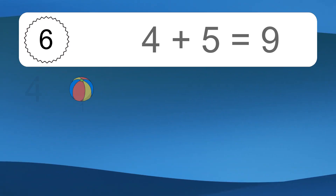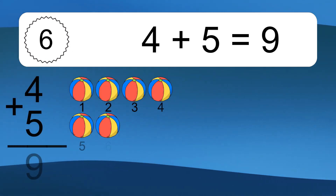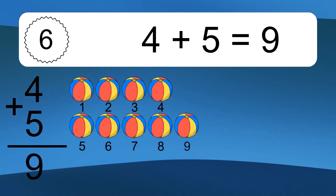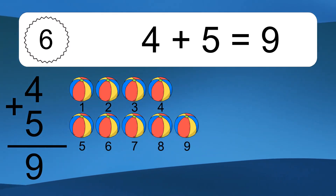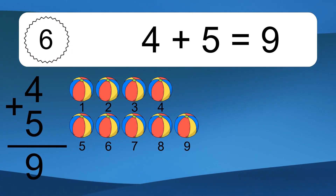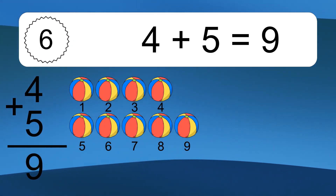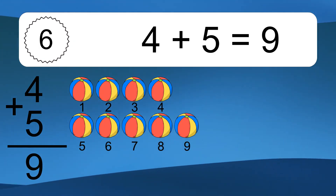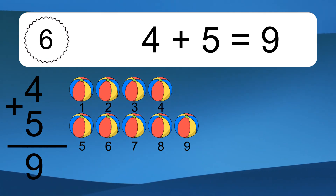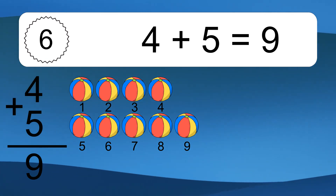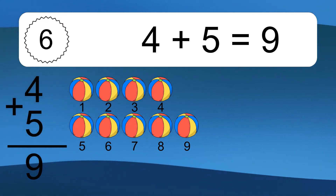4 plus 5 equals 9. Let's count it: 1, 2, 3, 4, 5, 6, 7, 8, 9.